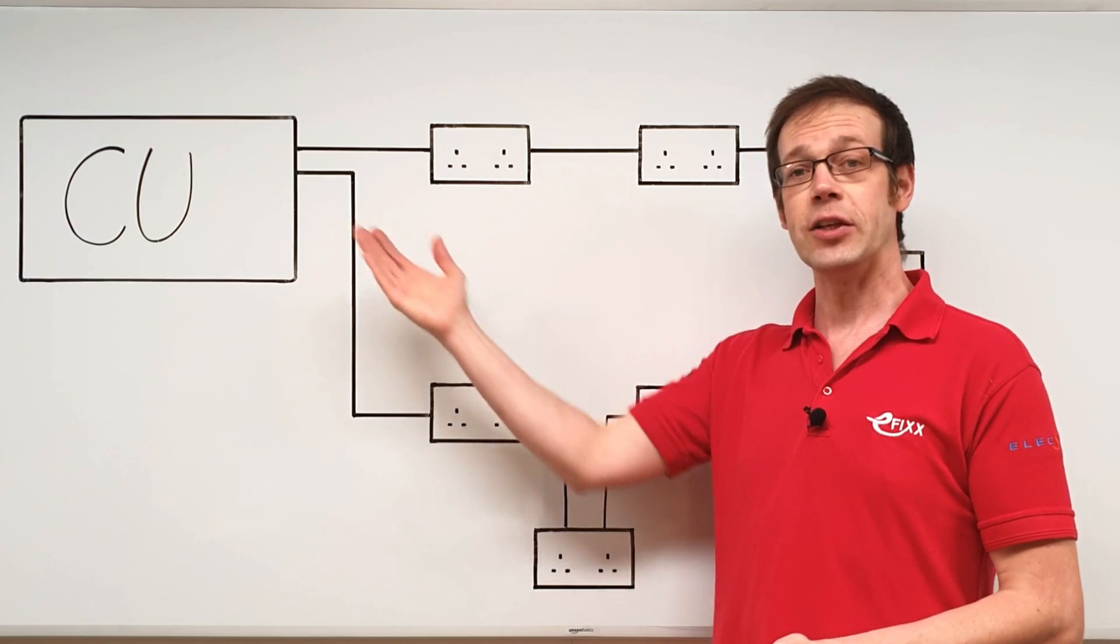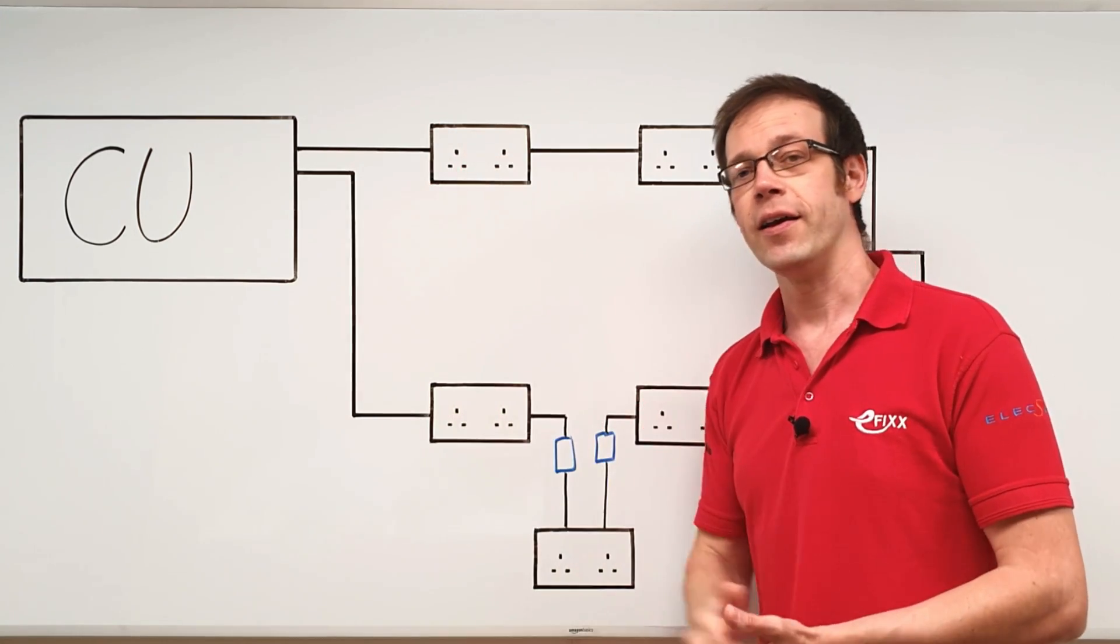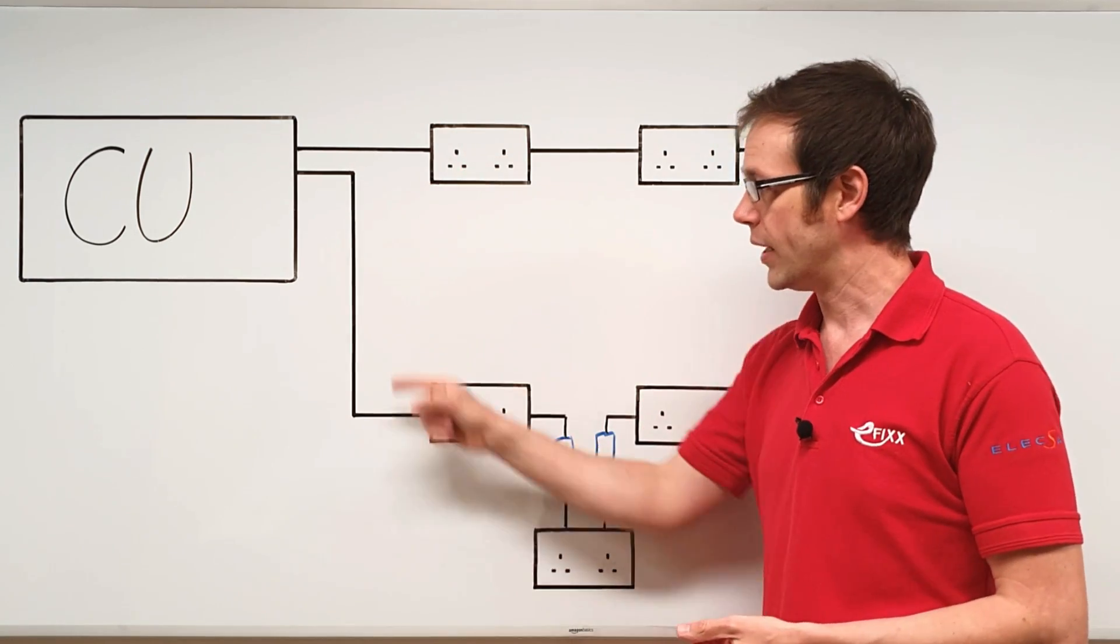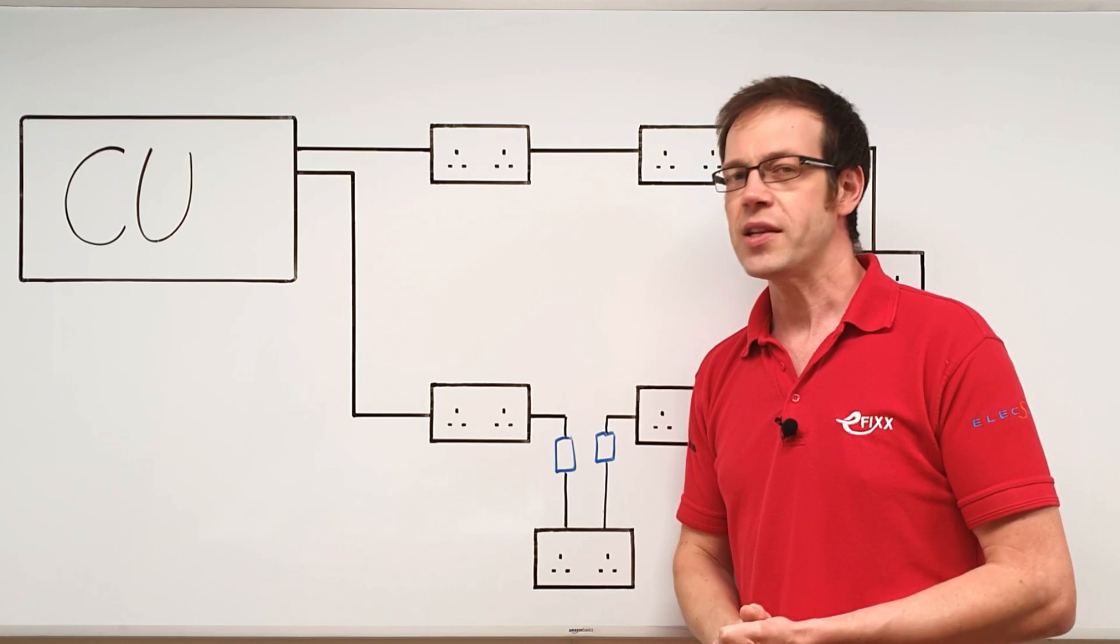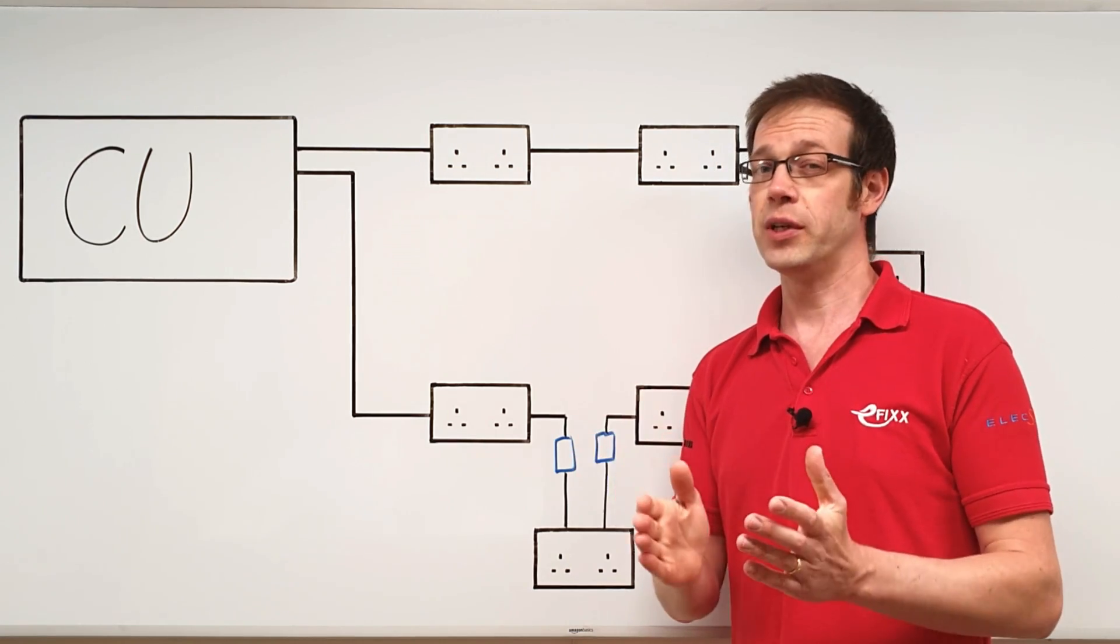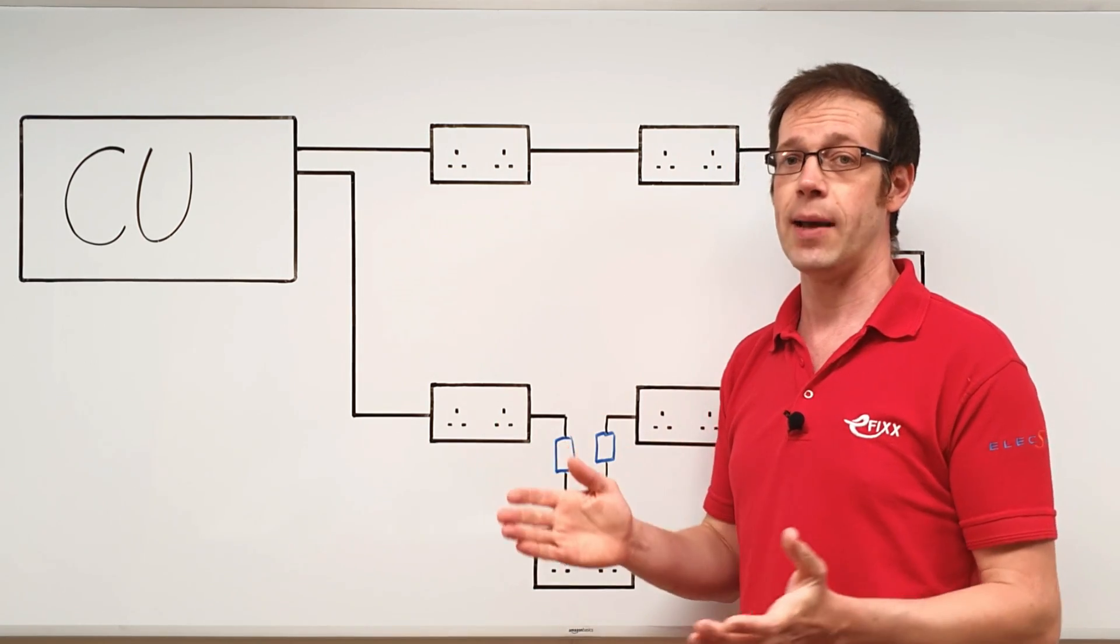Well, that's not quite true, because if it was, we could protect the circuit with a 40 amp MCB, and we can't do that.